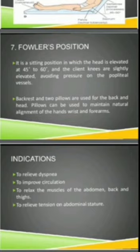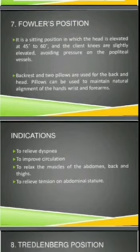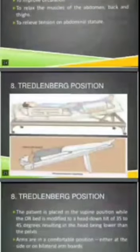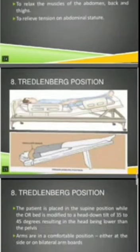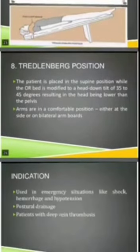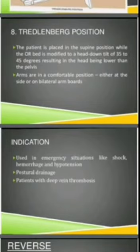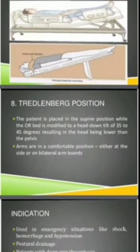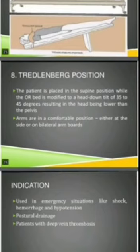The Trendelenburg position is where the patient is placed in a supine position. It is used in emergency situations like shock, hemorrhage, or hypotension — when a patient is in shock or has blood loss. It is also used for postural drainage and for patients with deep vein thrombosis.